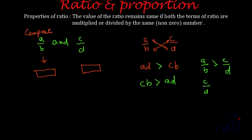And if cb is greater than ad, that means the ratio c is to d is greater than the ratio a is to b. And if ad is equal to cb, that means both the ratios are equal—that means a is to b is equal to c is to d.